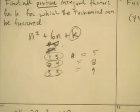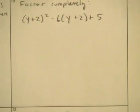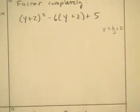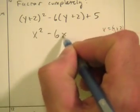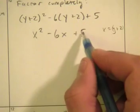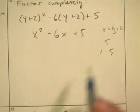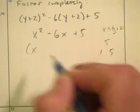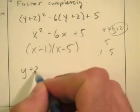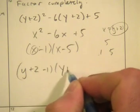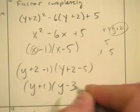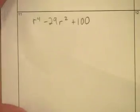Now we're going to do something a little more difficult using substitution. Let x equal y plus 2. Wherever I see y plus 2, I put x, so it makes sense. Now I look for two numbers that multiply to get 5 and add to 6. Factoring 5: it's just 1 and 5, and yes, 1 plus 5 equals 6. Both will be negative, giving x minus 1 times x minus 5. But remember what x is — x is y plus 2 — so it's really y plus 2 minus 1 times y plus 2 minus 5, which gives y plus 1 times y minus 3.